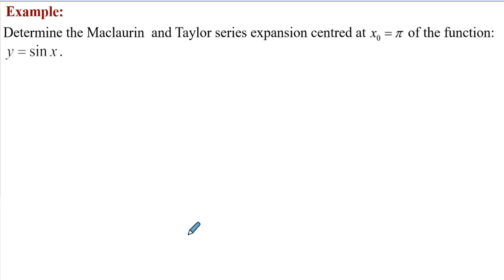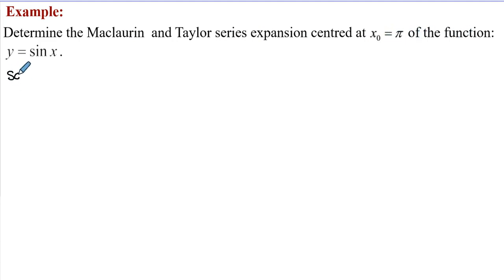Now we are ready to look at a simple example with the well-known function sine x. We are told to determine the Maclaurin series and the Taylor series expansion centered at x_0 = 2π. For the solution, we can decide to develop this series up to the first five, or zero-order, coefficients, so we need derivatives up to differential coefficients of order five.